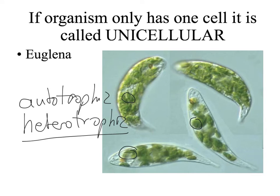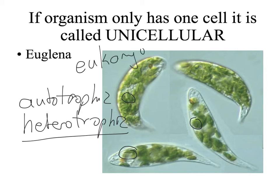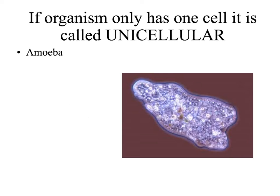So euglena is both autotrophic and heterotrophic. It is a member of the Protista kingdom, therefore it is eukaryotic. This is amoeba, and amoeba is also a unicellular organism — it is again a protist.